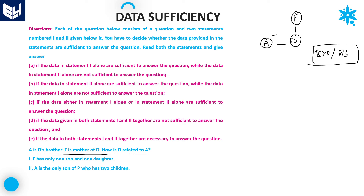Let's check using the given statements. The first statement says: F has only one son and one daughter. F has only one son, and that son is A. Automatically, the other child is a daughter, which means D is the daughter. So how is D related to A? D is the sister. You are getting the answer by using statement 1 alone — D is the sister of A.